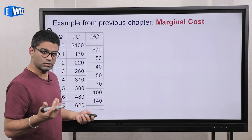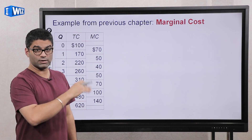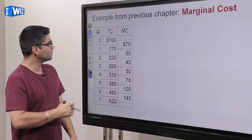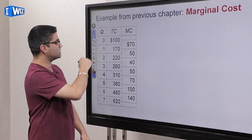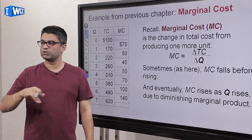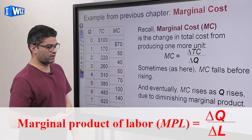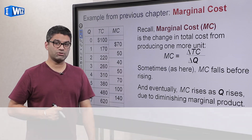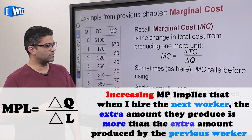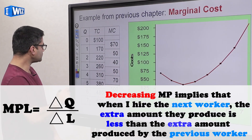This is the same example from the previous chapter where we looked at marginal costs. If you want to review, click the pop-up on the top right. We have total cost and marginal cost, which is change in TC divided by change in quantity. As you remember, MC is U-shaped — it goes down for low levels of quantity due to increasing marginal product of labor, and eventually the law of diminishing returns sets in, causing increasing marginal costs.